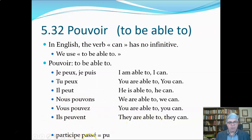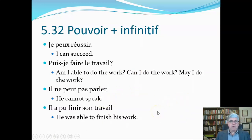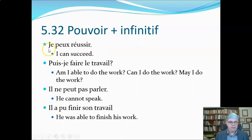The past participle is pu, which doesn't look like the stem at all, so you should probably make a separate flashcard for this past participle to learn it. Pouvoir is often followed by the infinitive. We can have a sentence like je peux réussir — that's 'I can' or 'I am able to,' and réussir is the infinitive for 'to succeed.' So we translate that as 'I can succeed' or 'I am able to succeed.'